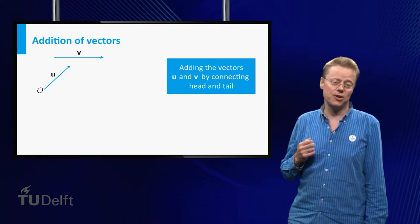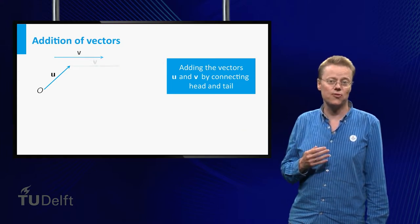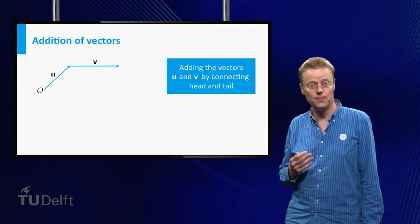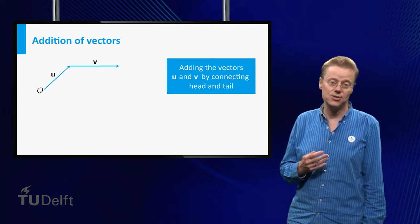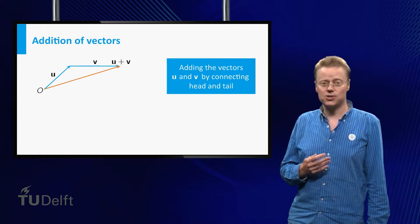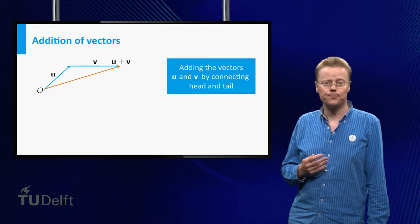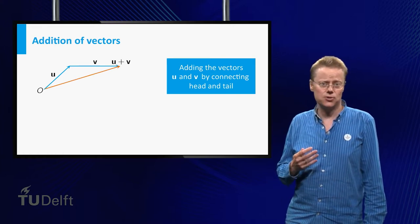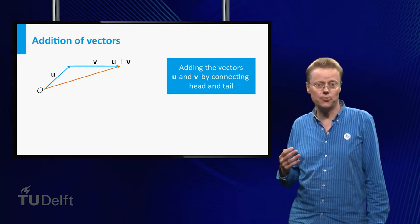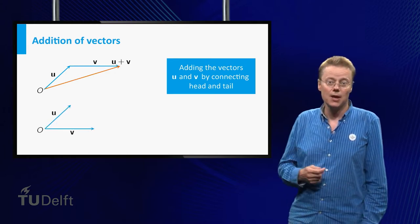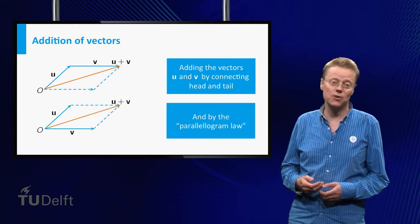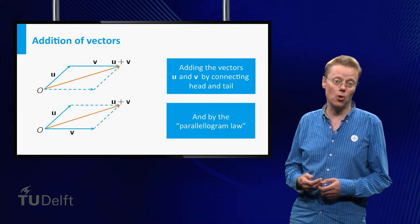In this picture, first shift the vector v such that its starting point is exactly the end point of u, and then add the vectors as before. In practice, however, if you want to add two vectors, you usually first shift their starting points to the origin. Then the sum of the two vectors can be obtained by using the so-called parallelogram law.